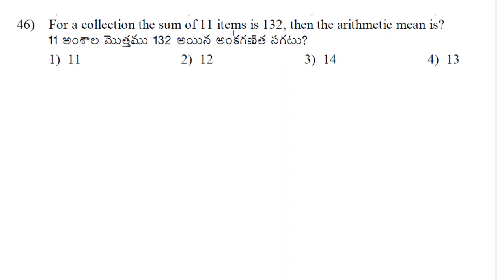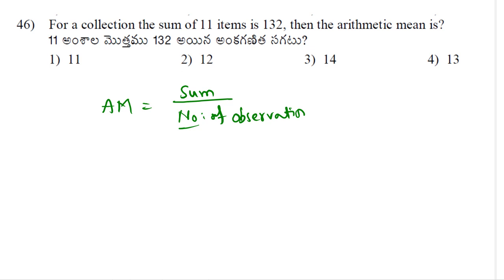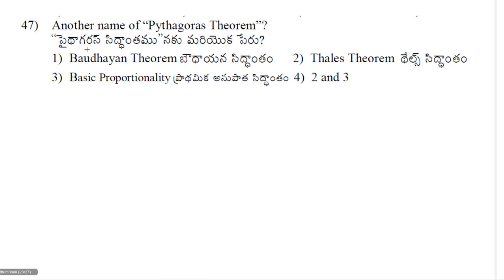46th problem: For a collection the sum of 11 items is 132. Arithmetic mean equals sum of observations divided by number of observations = 132/11. Dividing: 132/11 = 12. So the answer is option 2.